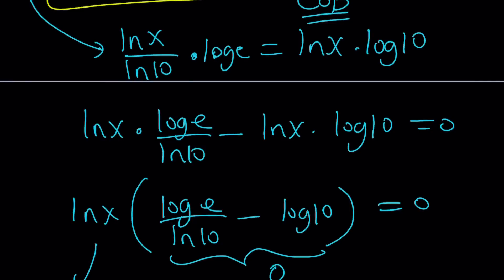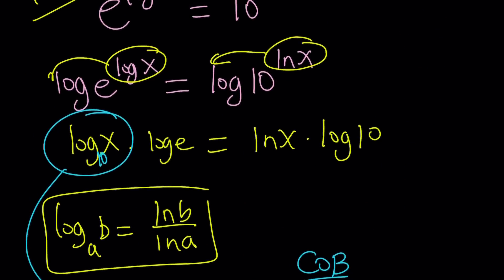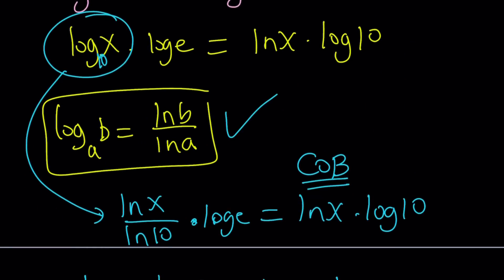And change of base formula is super duper important. Let's call it Cobb. Change of base. Don't forget, it's very important. This is the formula right here. Cool.